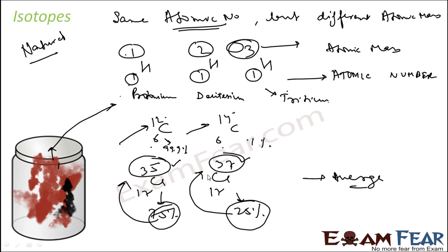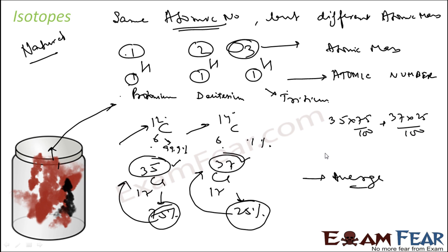If an element has no isotope, for example gold, then the mass of the atom is simply the sum of protons and neutrons. But if the element has isotopic forms, we need to know the percentage of each isotope and then find the average mass. For chlorine, that's 35 × 75% plus 37 × 25%, and you get 35.5 as the average atomic mass of chlorine.